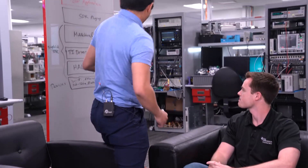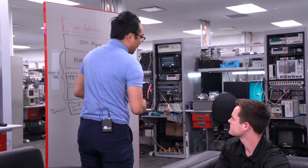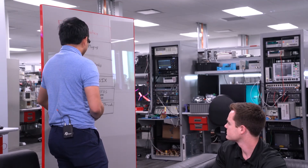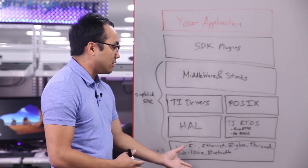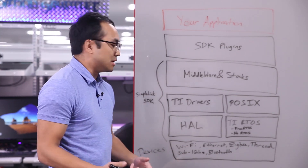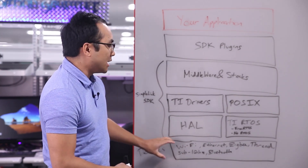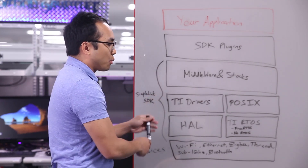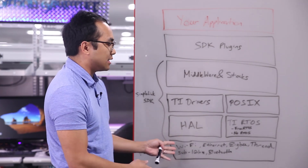The piece I'd like to zoom in on is that software piece — that common code base. So at the foundation of all of this are the SimpleLink devices, which are integrated with various connectivity options from Wi-Fi, Ethernet, ZigBee, Thread, Sub-1 gigahertz, and Bluetooth. What we wanted to enable was a modular software framework — the SimpleLink SDK — that enables code portability across this portfolio of connected microcontrollers.